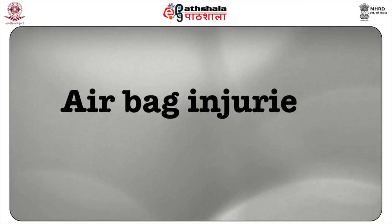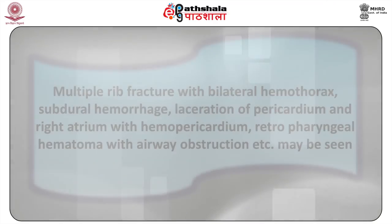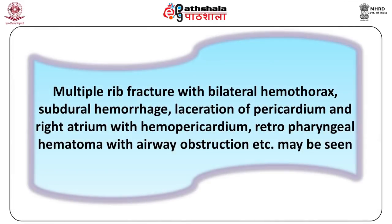Airbag injuries: although airbags decrease the incidence of fatal injuries, they themselves may cause serious injuries — at least one airbag-related injury occurs in every 43% of airbags deployed. This injury is common in adults with short stature and children. Fatal injuries may be seen in children sitting in the passenger seat, caused by impact of the chest against the airbag: multiple rib fractures with bilateral hemothorax, subdural hemorrhage, laceration of pericardium and right atrium, hemopericardium, and retropharyngeal hematoma with airway obstruction.